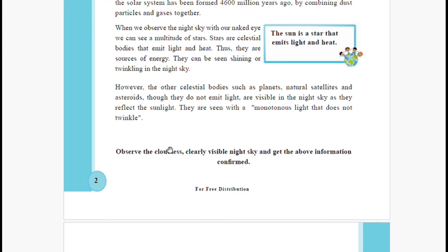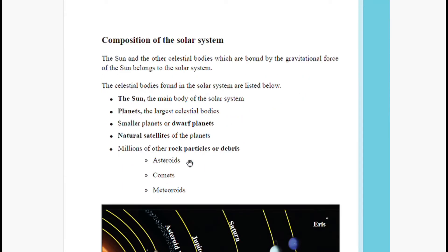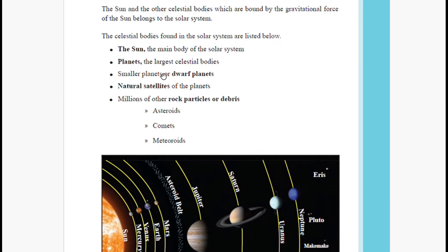Our natural satellite is our moon. There are other planets in the solar system that have many natural satellites, but Earth has only one. Go outside at night and observe the sky — there are various beautiful, colorful things you can see.